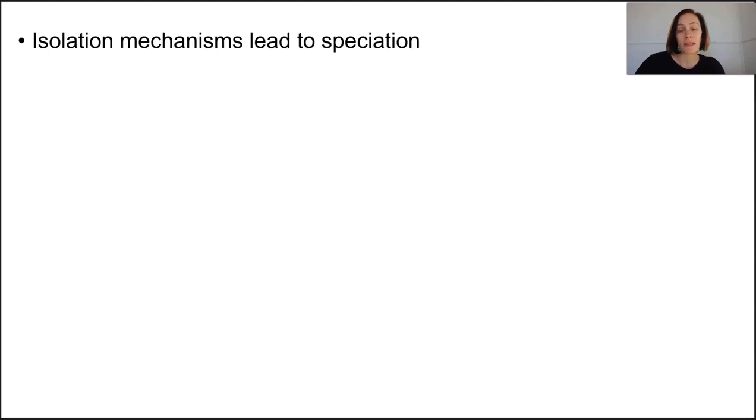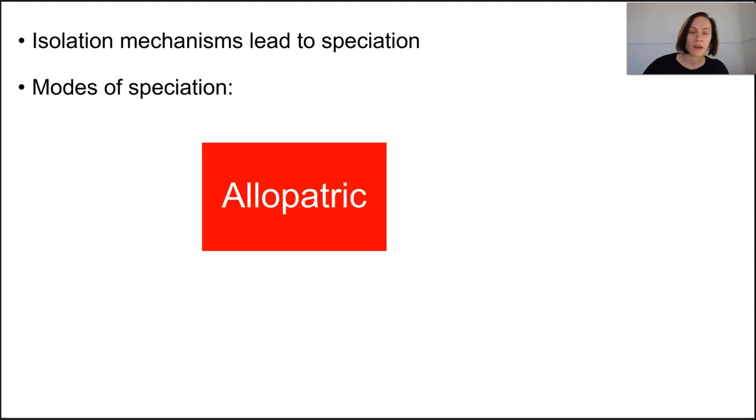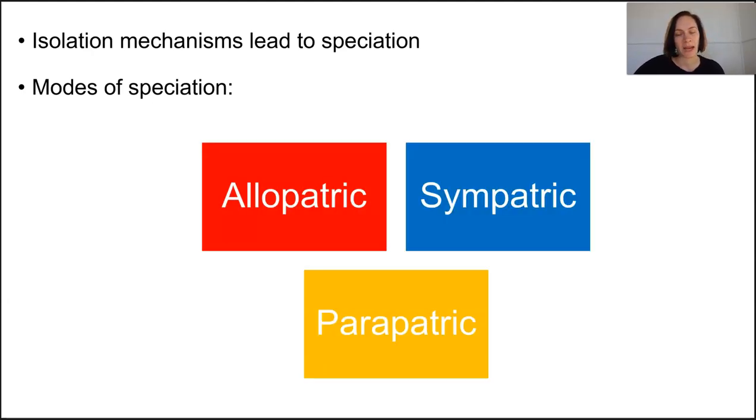Different isolation mechanisms lead to different modes in which speciation can occur, and the three we're focusing on are allopatric, sympatric, and parapatric.